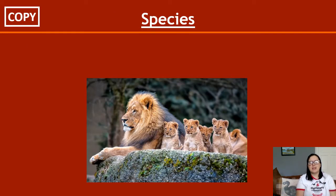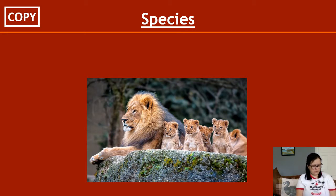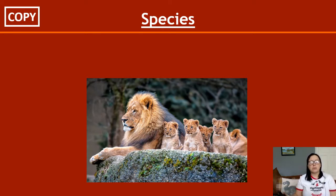The first word we're looking at is species. The definition of a species is a group of organisms with similar characteristics who are able to interbreed and produce fertile offspring. Fertile offspring means the offspring are capable of having their own offspring. So these lion cubs, when they grow up and reach maturity, are able to produce lion cubs of their own. If they were infertile, they would not be able to produce lion cubs of their own.